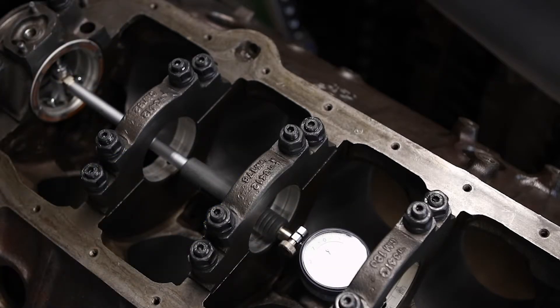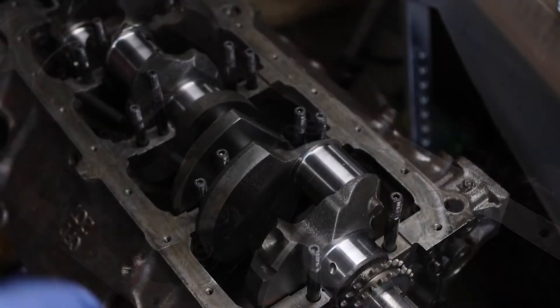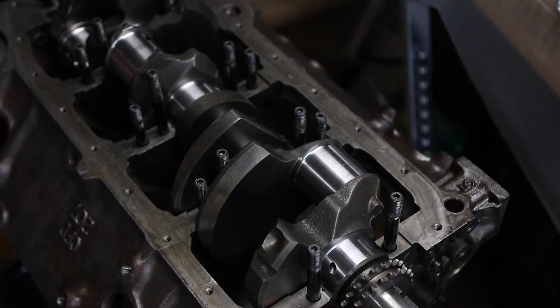Now we're going to take everything out, make sure the crank is nice and clean, put it in, put some plastic gauge on it, and see what it looks like. Crank is in, so now I'm going to put some plastic gauge, and then I'll torque everything and we'll see what we get.